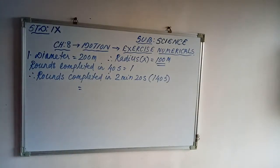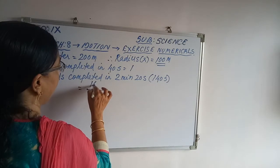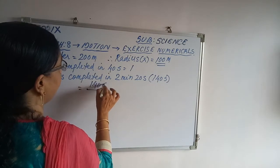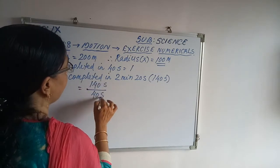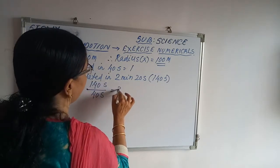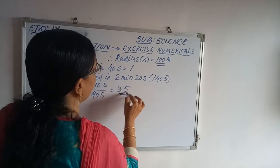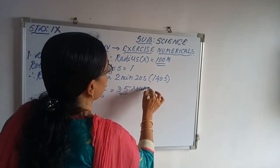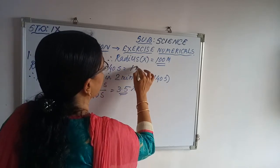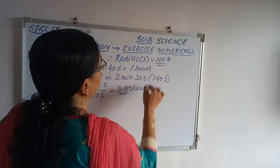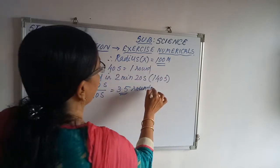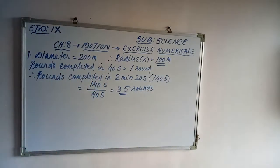So the rounds completed in 140 seconds: 140 divided by 40 will give you 3.5 rounds. So 3.5 rounds are completed by the athlete along the circular path in 140 seconds.